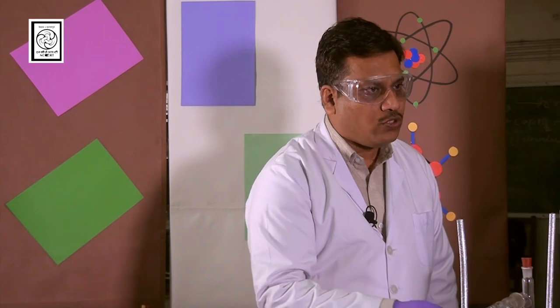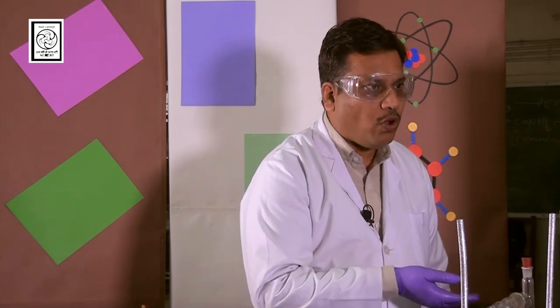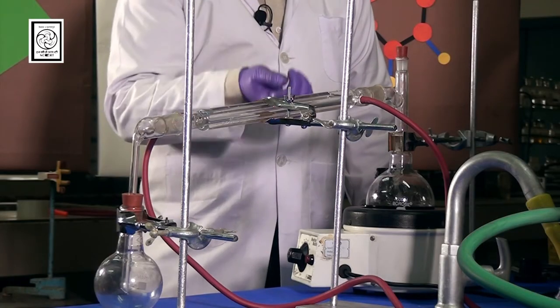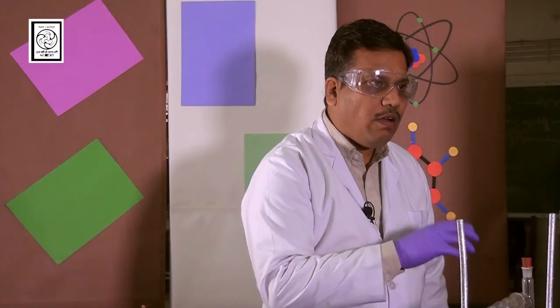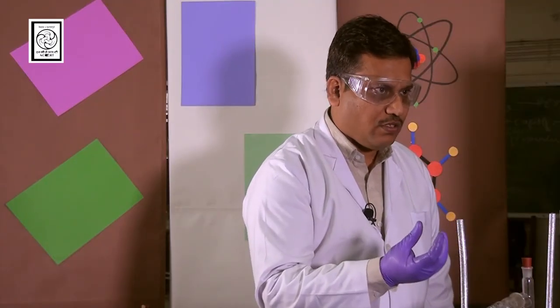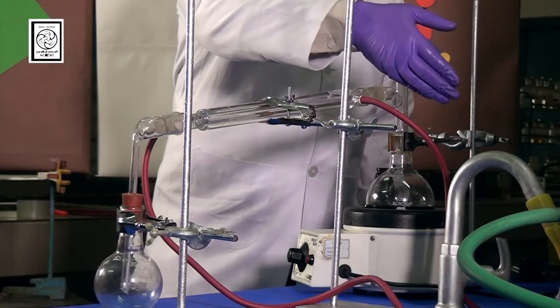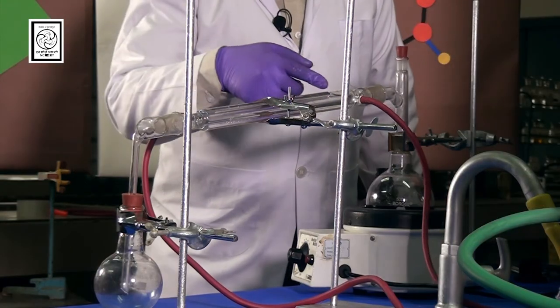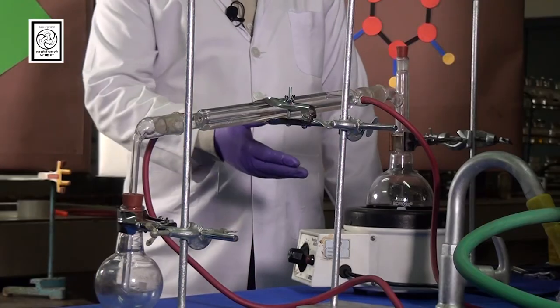So why are we using these porcelain chips? Because we are using organic solvents. If we will not use these porcelain chips then solvent may bump out. The liquid may bump out from the flask. They will provide a certain surface for boiling. That's why we are using it. Now you can see that water is flowing properly through condenser. So let us initiate the process of distillation.